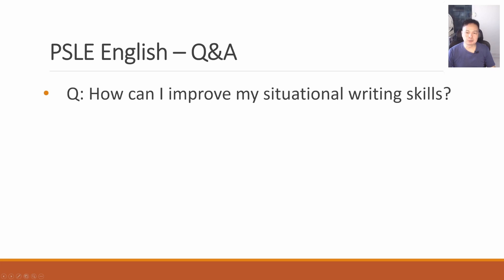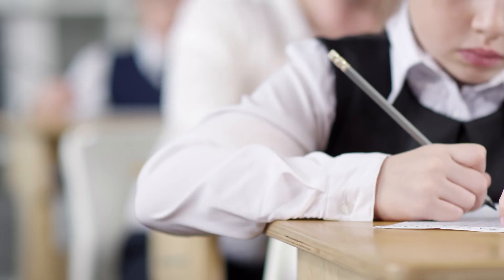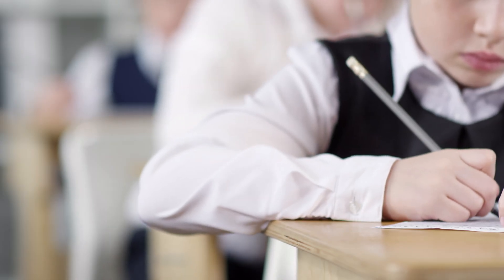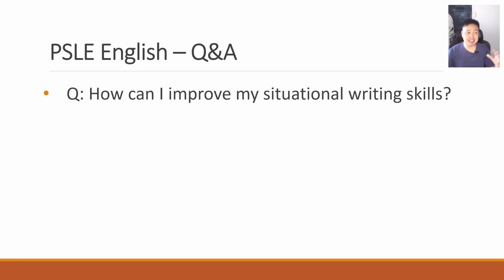How can I improve my situational writing skills? Just practice as many times as you want. You can use past year papers, exam papers from other schools — they are available for download all over the internet. You can use assessment books as well. The important thing is to have someone vet through your answer and mark it so that you know you are improving.